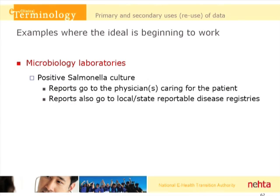There are some examples where these secondary uses are beginning to work. A microbiology laboratory might have a positive salmonella culture — they'll send an electronic report to the physicians caring for the patient and also send reports to the local and state reportable disease registries. In places where this is in active use, it reduces the time to reporting of reportable infectious diseases by several days in most cases. That's a very positive example of how this sort of secondary use can take place.